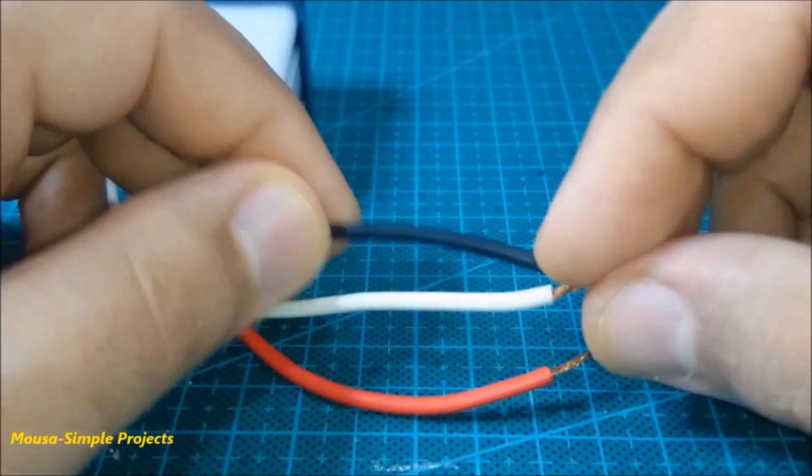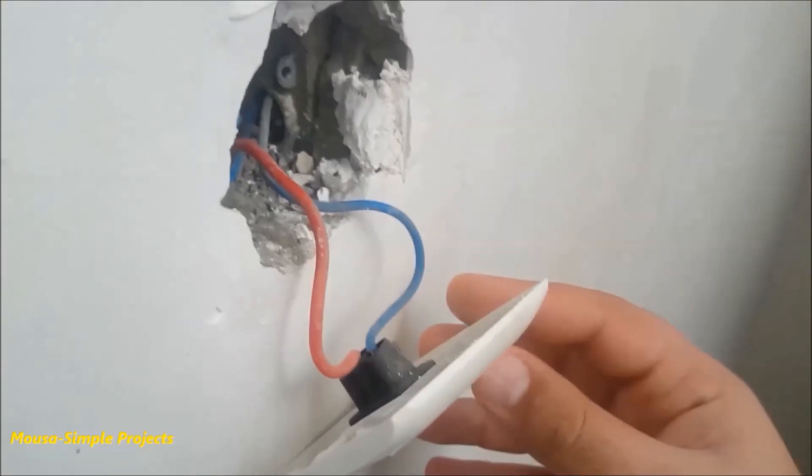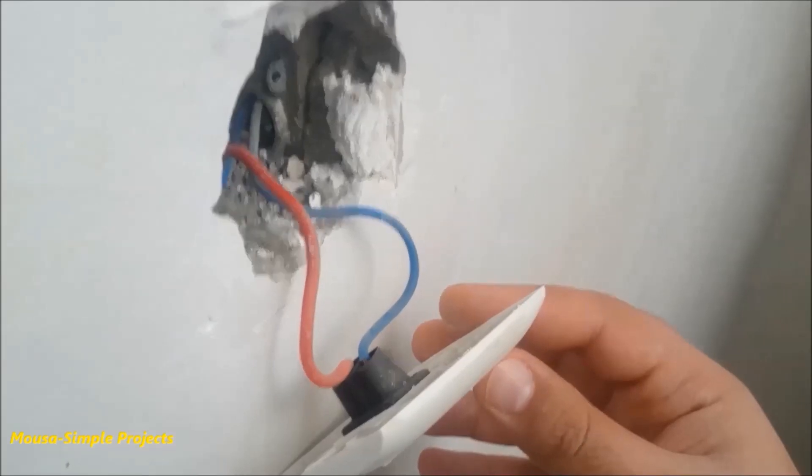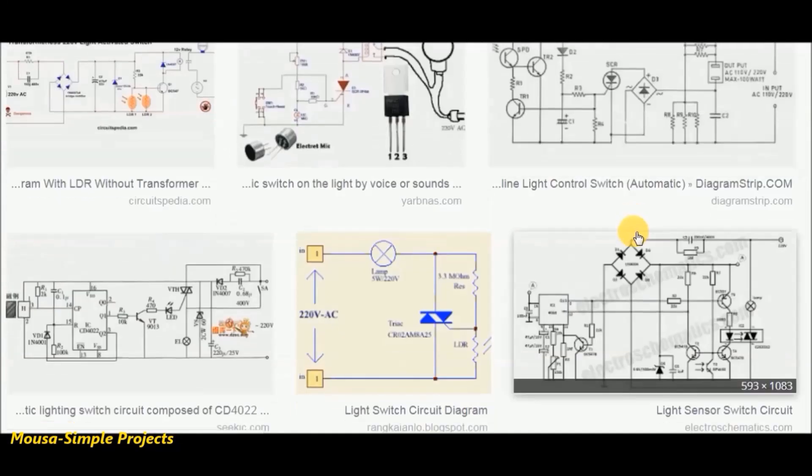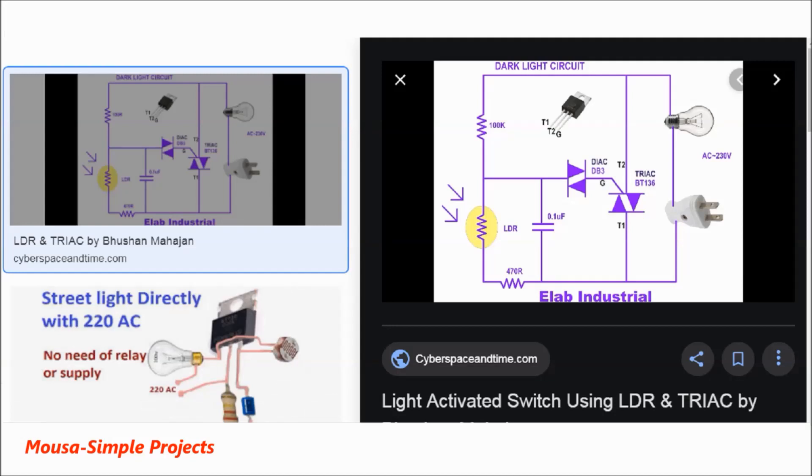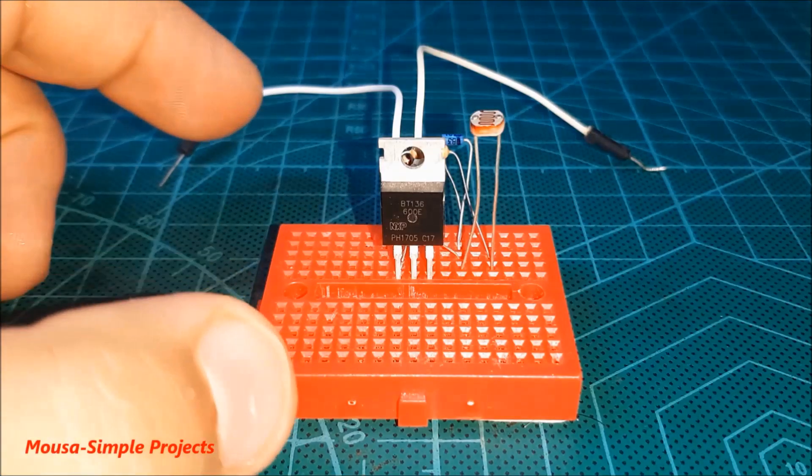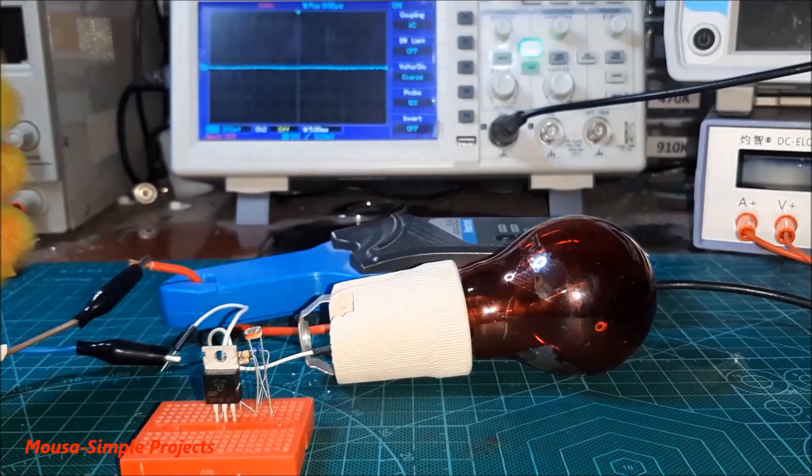The second problem is it has three wires which makes installation difficult. I searched for a photocell switch with two wires and found this circuit, so I made it on the breadboard.